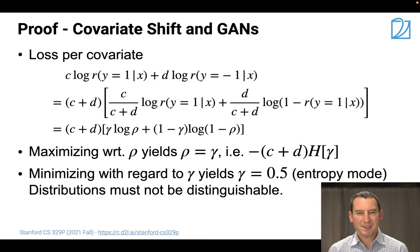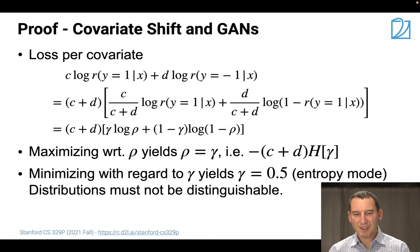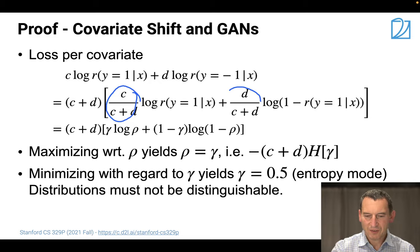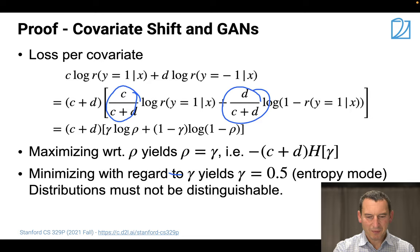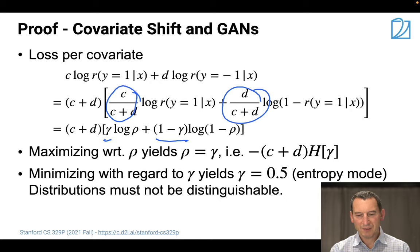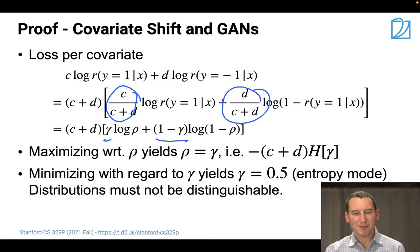For a single x, we have c·log r(y=1|x) plus d·log r(y=-1|x), where one is the training set and the other is the test set. In general, I can pull out (c+d) and divide again, getting those fractions. Nothing's changed - this is just gamma and one minus gamma, and those weights are less than one and sum to one.